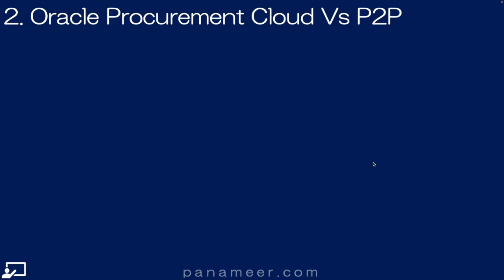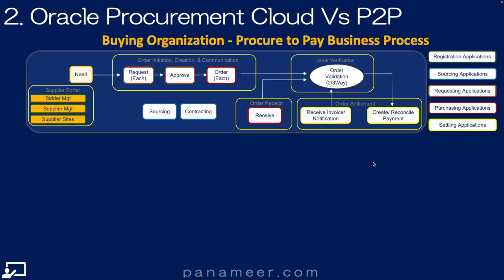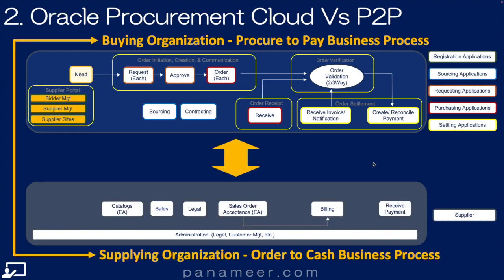Slide two: Oracle Cloud versus the traditional P2P process. Now that we've seen the 14 steps of procurement cloud processing, let's compare that with the industry's definition of the P2P process. Here we see the buying organization's procurement process and the reciprocal supplier organization order-to-cash process. The big takeaway is that the P2P process includes settlement or payables activities and transactions. Oracle's procurement functional area and its procurement cloud sales offering do not. Within Oracle, payables transactions are part of the payables functional area.